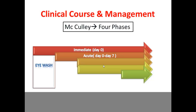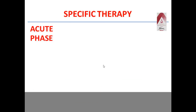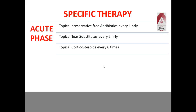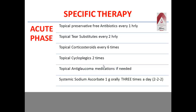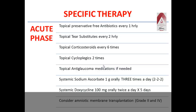After immediate management, we move to acute medical treatment. Specific therapy includes: preservative-free antibiotics every hour, tear substitutes every two hours, corticosteroids six times a day (three-hourly), topical cycloplegics twice a day to relieve ciliary spasm, anti-glaucoma medications if needed, systemic vitamin C 1g three times a day, and doxycycline 100mg orally twice a day for five days. Amniotic membrane transplantation may be required from grade 2 to grade 4.